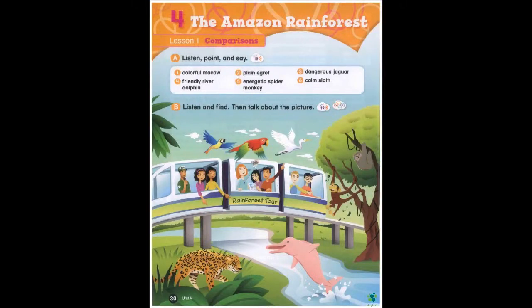Unit 30, the Amazon Rainforest. Lesson One: Comparisons. Listen, point and say. One: colorful macaw. Two: plain egret. Three: dangerous jaguar. Four: friendly river dolphin. Five: energetic spider monkey. Six: calm sloth.